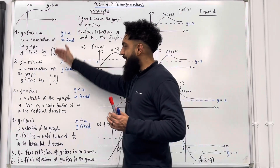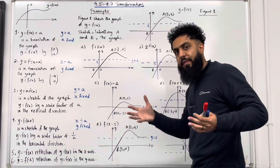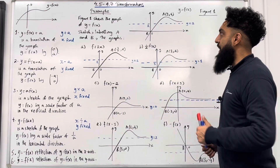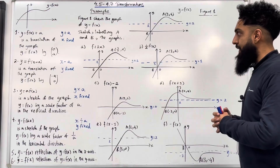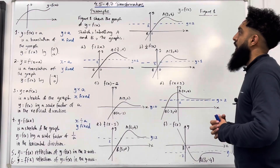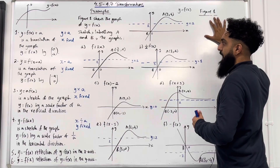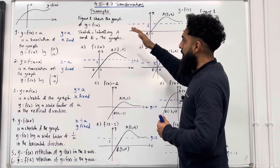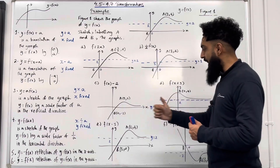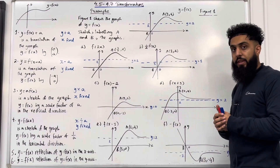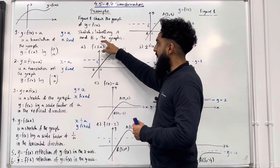You need to know all of these transformations in order to take a general curve and transform it for your examination. Now we know all the different types of transformations, let's go through an example. Figure 1 shows the graph of y equal f of x. Sketch, labelling a and b, the graphs of a, b, c, d, e and f. Let's start off with a: f of 2x inside the bracket.